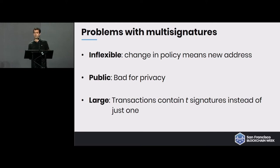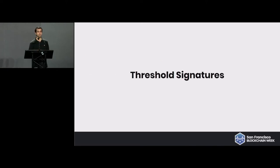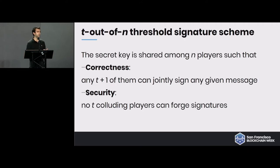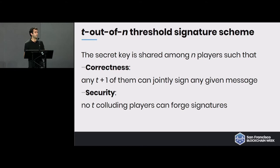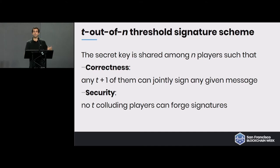So what could we do about that? Instead of using multi-signatures we use something very similar called a threshold signature — you could think of it as a stealth multi-signature because it does basically the same thing. You have t-out-of-n: there are n people in the group and as long as t of them sign off everyone's happy. But if fewer than t of them get together they can't do anything — they can't learn anything about the key, they can't authorize transactions, and they can't sign messages.